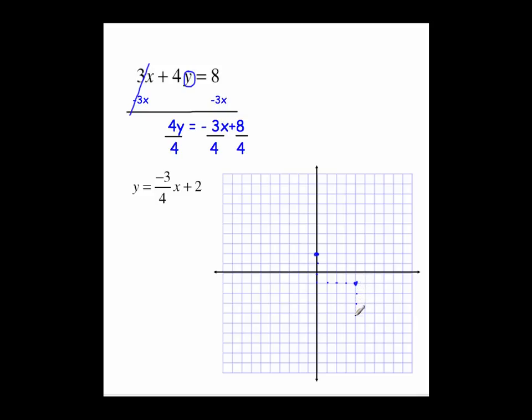Down 1, 2, 3, to the right 1, 2, 3, 4. Draw your line through those points. Let's see if I can hit. Okay?